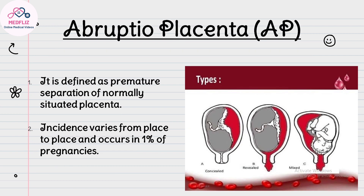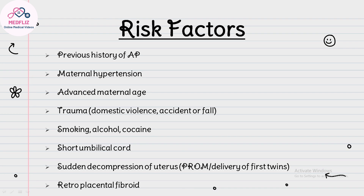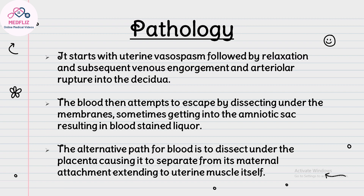Placental abruption is defined as premature separation of a normally situated placenta. Incidence varies from place to place and occurs in about 1% of pregnancies. Risk factors include previous history of abruption, maternal hypertension, advanced maternal age, trauma from domestic violence, accident or fall, smoking, alcohol, cocaine, short umbilical cord, sudden decompression of the uterus as in PROM or delivery of the first twin, and retroplacental fibroid.